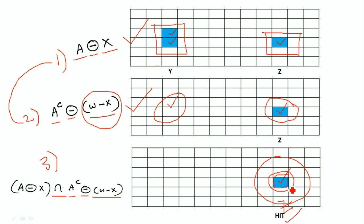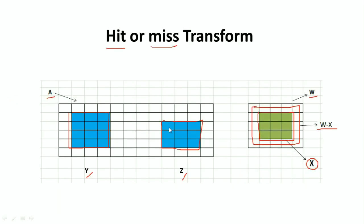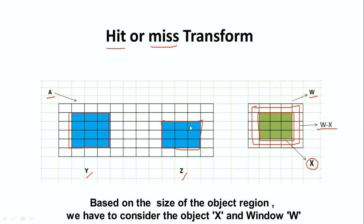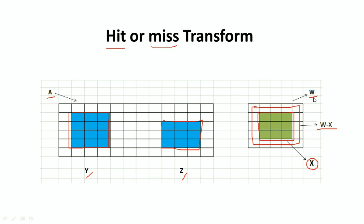If after the intersection there is no pixel, then we call it a Miss. This is how we perform the Hit or Miss Transform. Within image A, we found an object region of size 3 by 3. Based on the problem, we need to define the object X and the window W accordingly.